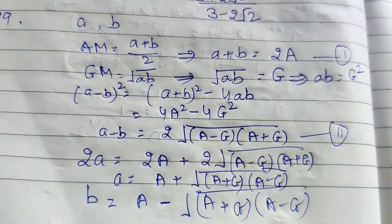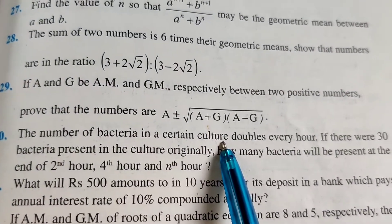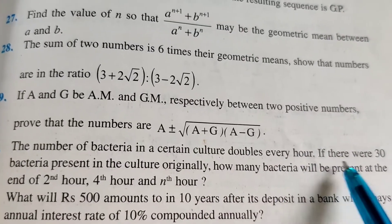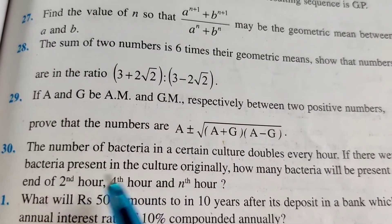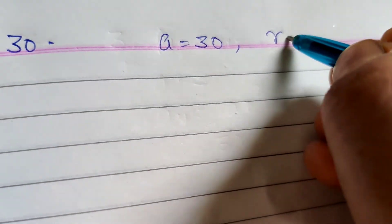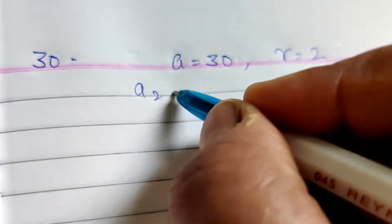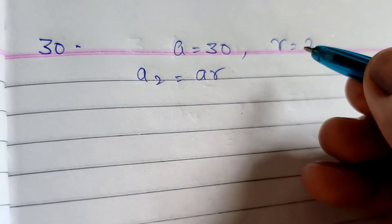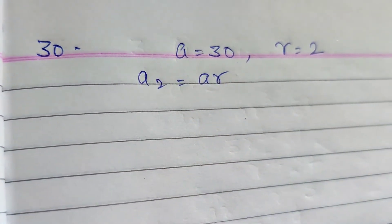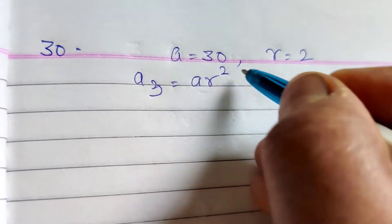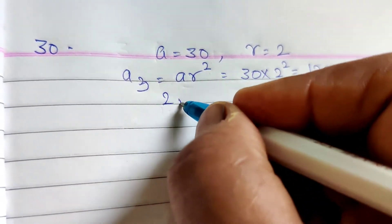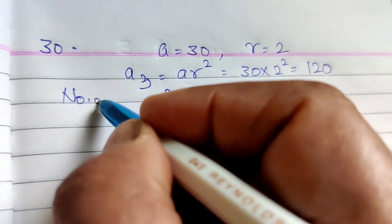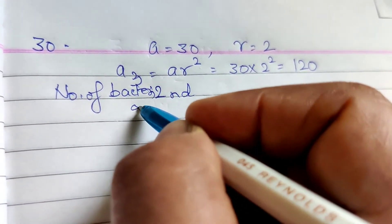Question number 30: The number of bacteria in a certain culture doubles every hour. If there are 30 bacteria present in the culture originally, how many bacteria will be present in the second hour, fourth hour, and nth hour? Initially bacteria count is 30 and growth rate (common ratio) is 2.